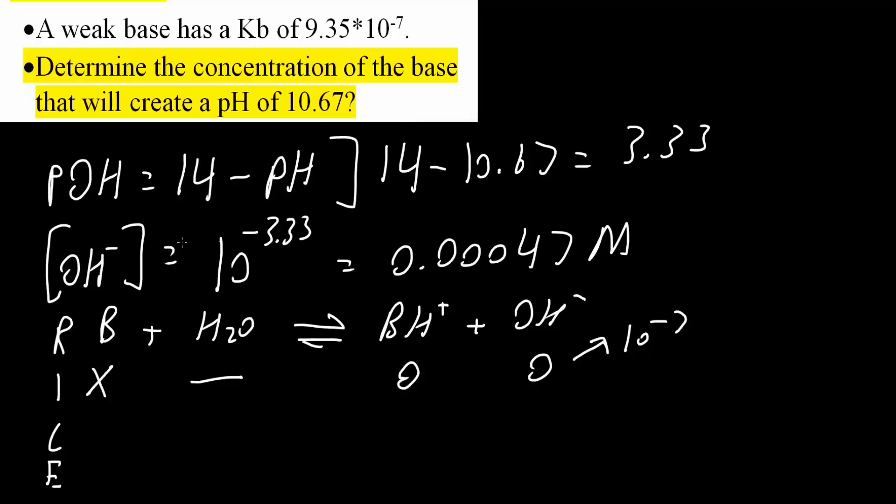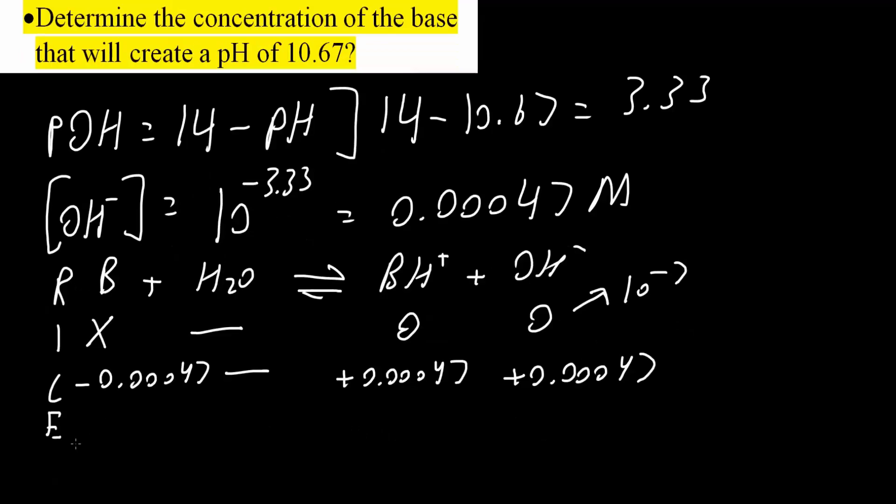And then from here, OH minus should be 0.00047. So our change in concentration would be plus 0.00047. Likewise, BH plus would be the same, plus 0.00047. And for our reactant, it's the opposite, negative 0.00047. And we ignore water. So at equilibrium, we have X minus 0.00047 and these two go down.